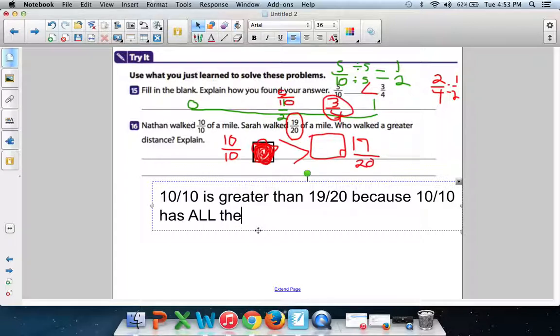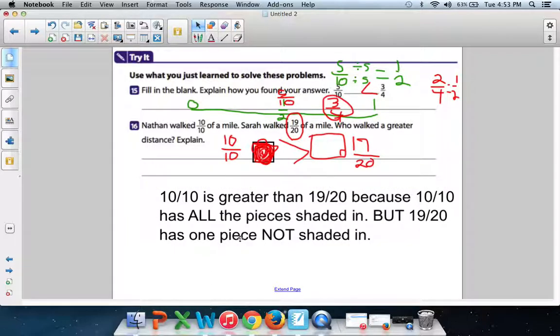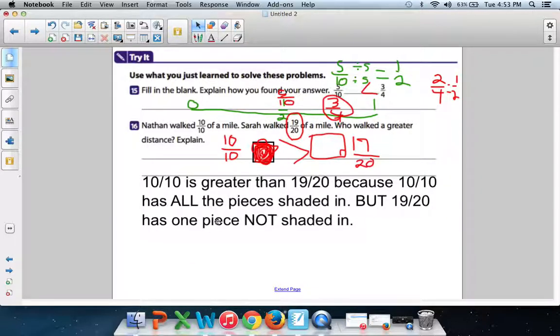So 10 tenths is greater than 19 out of 20 because 10 tenths has all the pieces shaded in, but 19 out of 20 has one piece not shaded in. All right. That explains that. All right, guys. That's all we have to do.